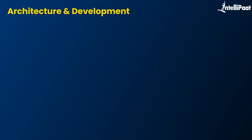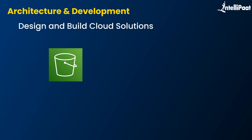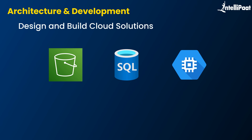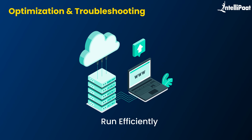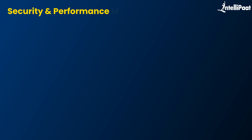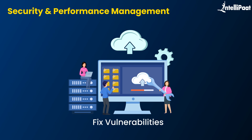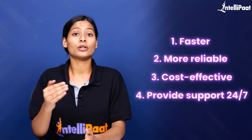To get real insights, we consulted our hiring partners from AWS, Azure, and GCP. According to them, cloud engineers handle architecture and development — designing and building cloud solutions using services like AWS S3 buckets, Azure SQL databases, or Google Compute Engine. They also handle optimization and troubleshooting, ensuring systems run efficiently with minimal downtime and cost. Finally, they manage security and performance, detecting and fixing vulnerabilities while maintaining peak performance and data integrity. In a nutshell, cloud engineers don't just build systems — they make them faster, more reliable, and cost-effective, while providing ongoing 24/7 support.